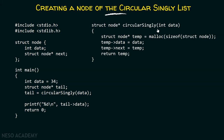This is the circularSingly function. The integer data variable will receive the value 34. We have a temp pointer declared, and to this temp pointer we are passing the address of the node — memory allocated by the malloc function. To the data part of the node we store the value 34, and to the next part we store the address of the node itself, that is temp. Finally, we return temp back to the main function, which is received by tail, and using tail we can print the data of the node.